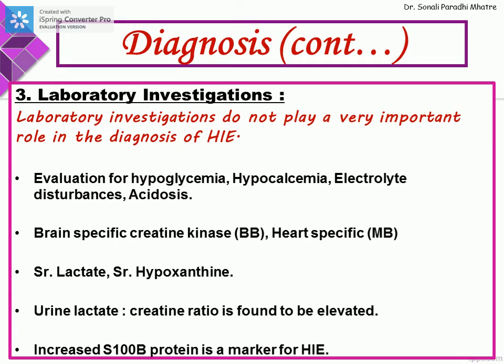Lab investigations do not play a very important role in diagnosing HIE, but we can evaluate for hypoglycemia, hypocalcemia, electrolyte disturbance, and acidosis. Brain-specific creatine kinase — BB or MB isoforms — can be used. Serum lactate, serum hypoxanthines, and urine lactate-to-creatinine ratio are found to be elevated. The neuromarker S100B protein can also be used, but these are not generally required for diagnosis.